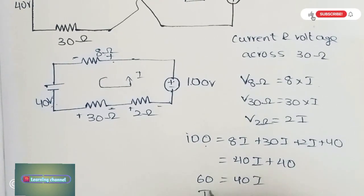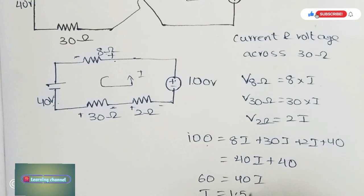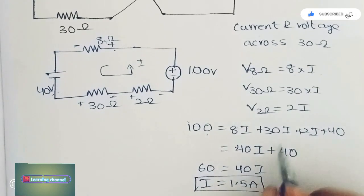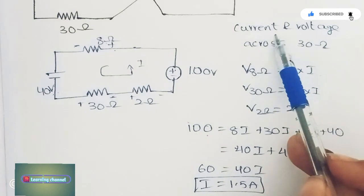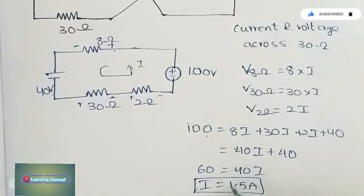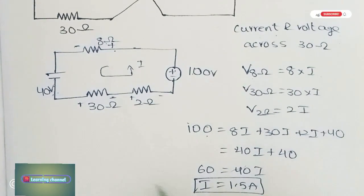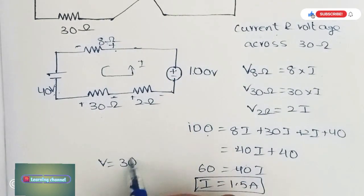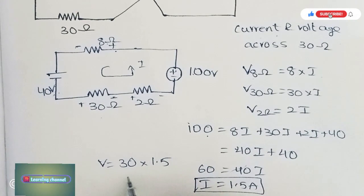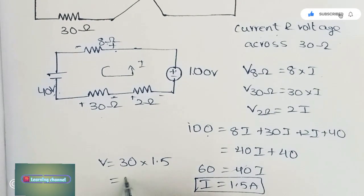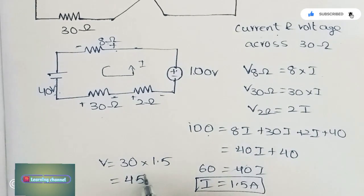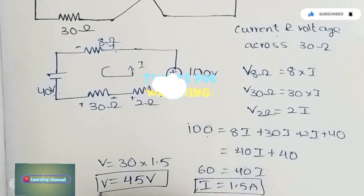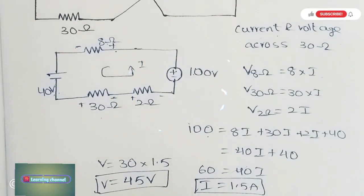By solving this, we get I = 1.5 amperes. This is the value of I. They asked for the current and voltage. We know the current I = 1.5A. The voltage across 30Ω is 30 × 1.5 = 45 volts. In our next videos, let us see some more problems on KVL.